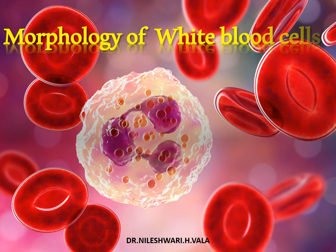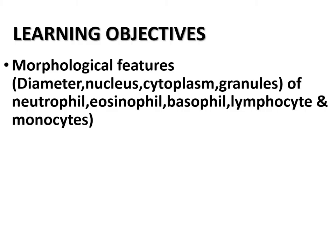Hello guys, welcome to my new video. The topic is on morphology of white blood cells. The learning objective of this topic is morphological features of WBC like neutrophil, eosinophil, basophil, lymphocyte, and monocyte — covering features like diameter of cell, nucleus (bilobed, lobed, or multi-lobed), cytoplasm, and the granules present in the cytoplasm of the cell.